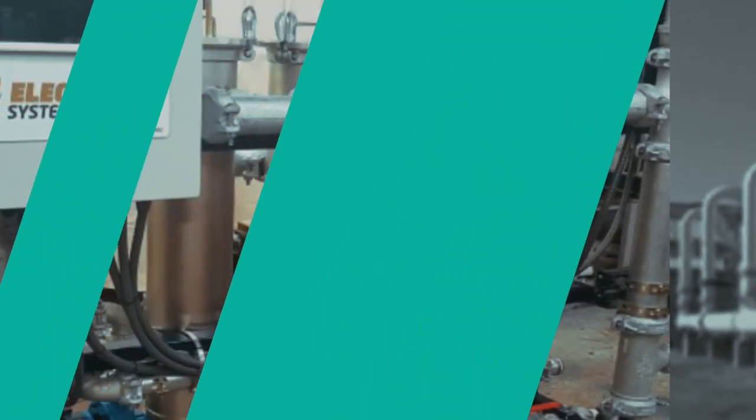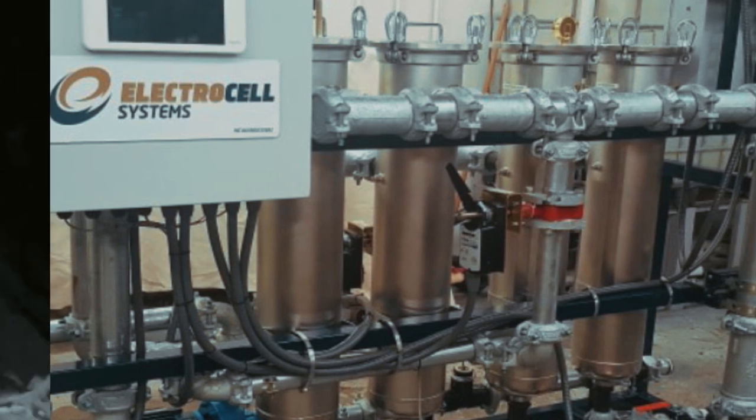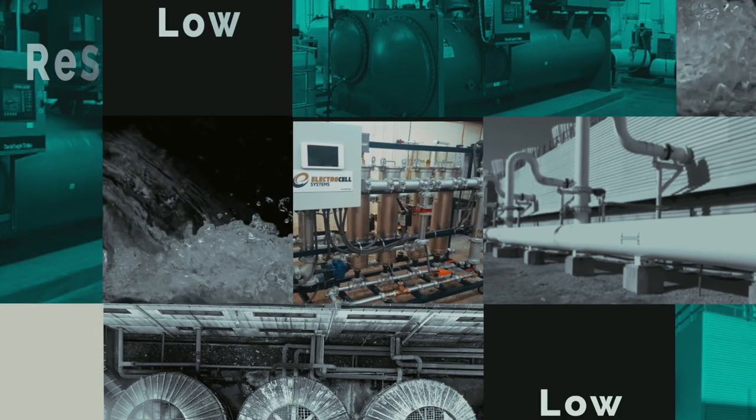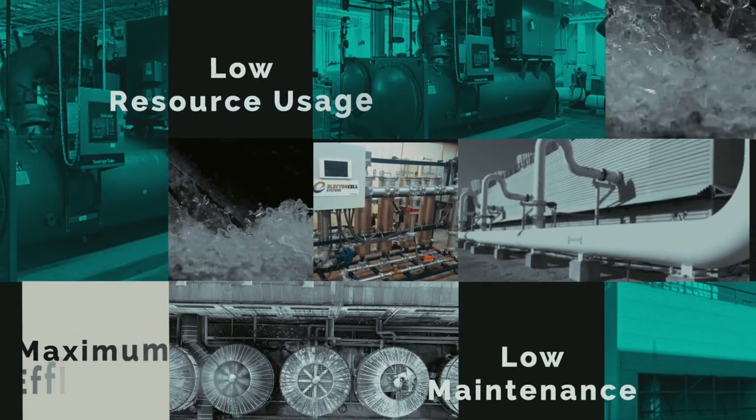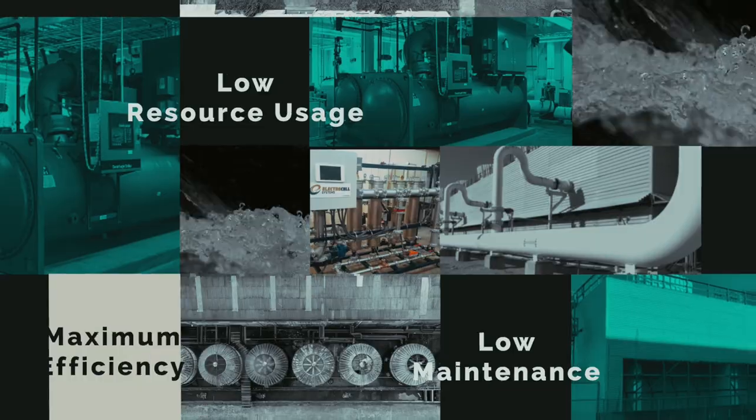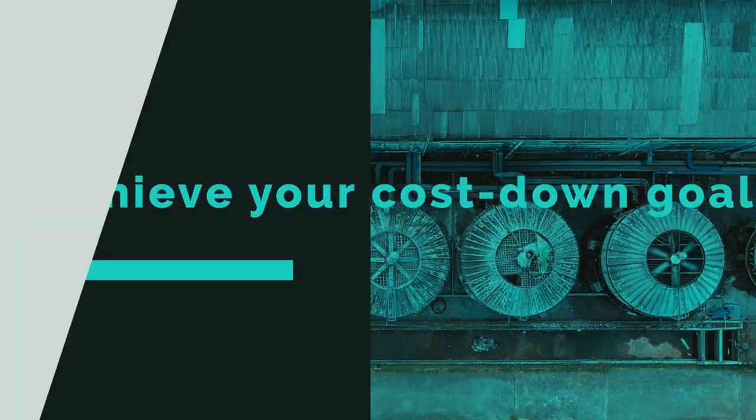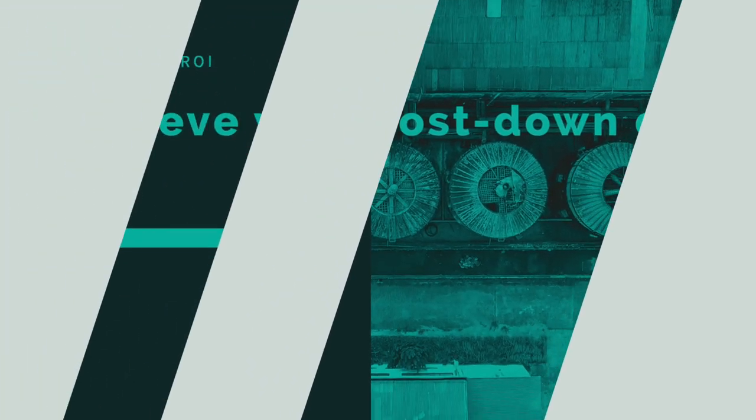The Electrocell system is the best proactive solution available for achieving maximum efficiency, lower resource usage, and lower maintenance in your cooling tower and chiller operation. With its exceptional ROI profile, this is a great way to achieve your company's cost-down goals this year, and many more to come.